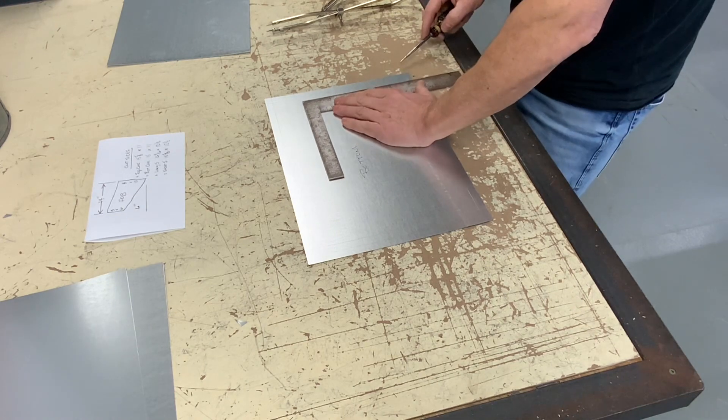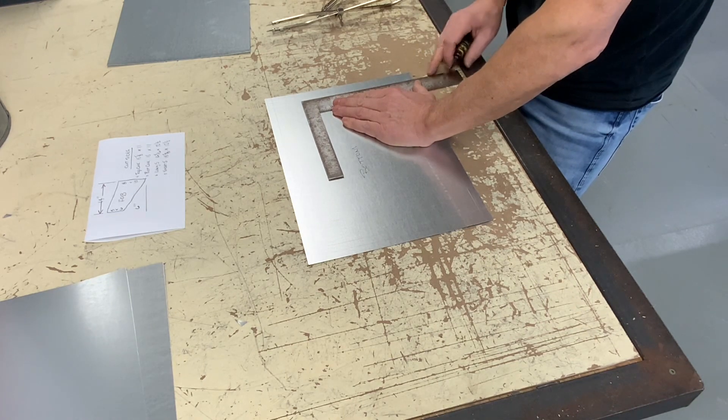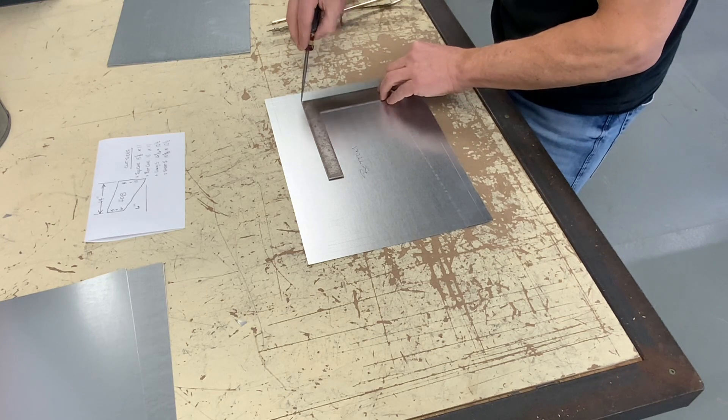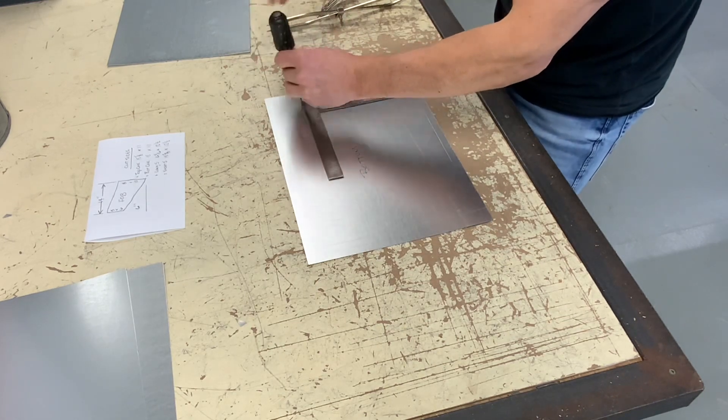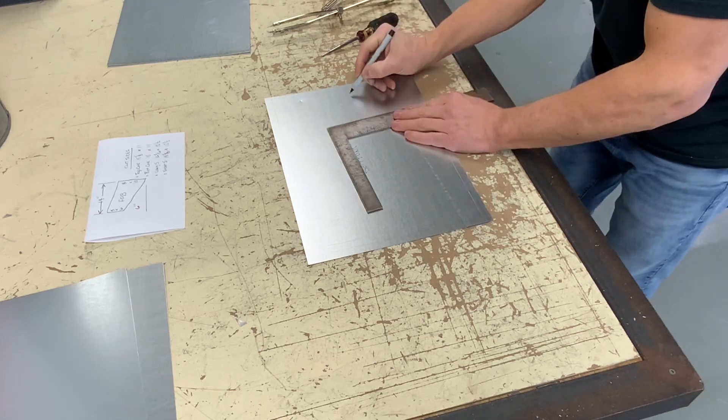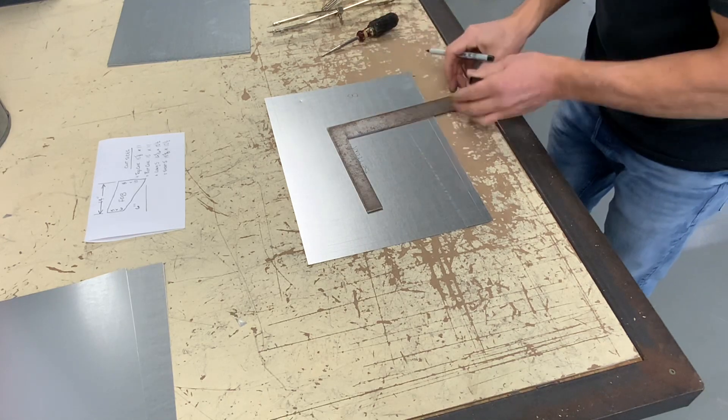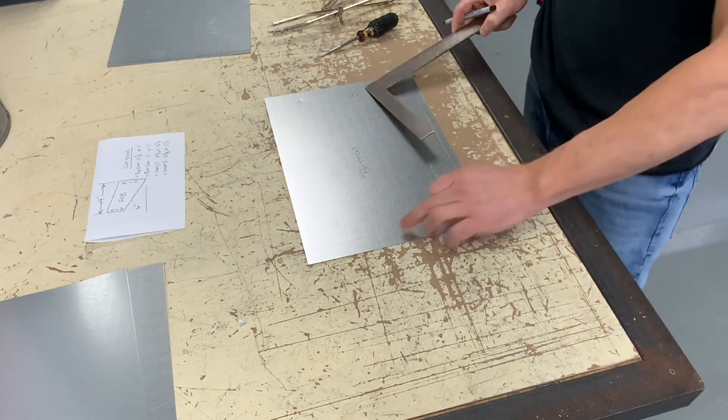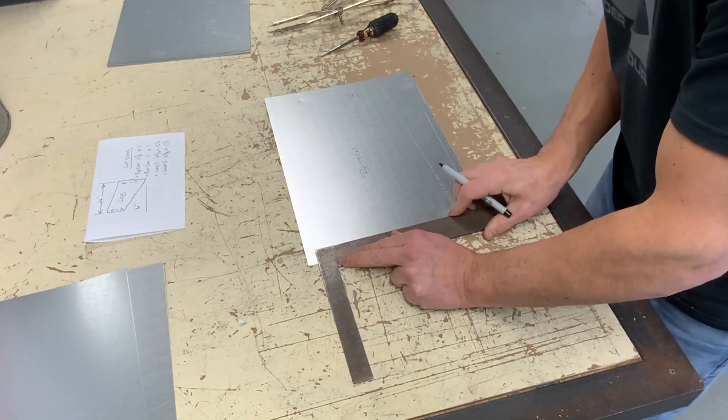Now I will start adding my duct opening dimensions. On this end, I have eight inches. On the other end, it will be five.